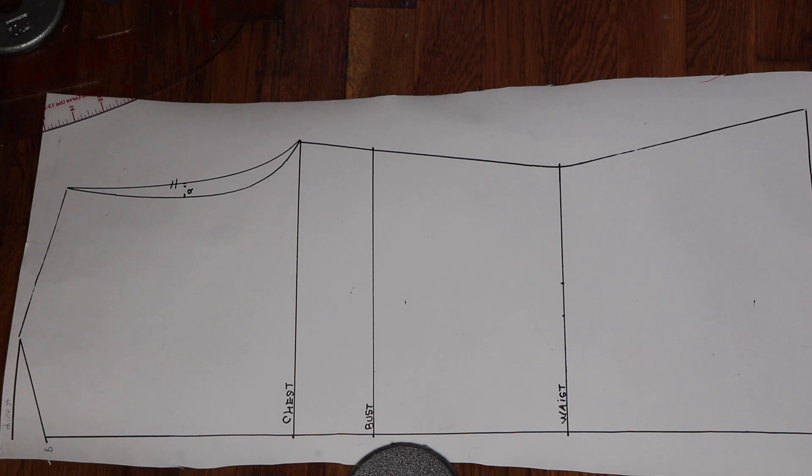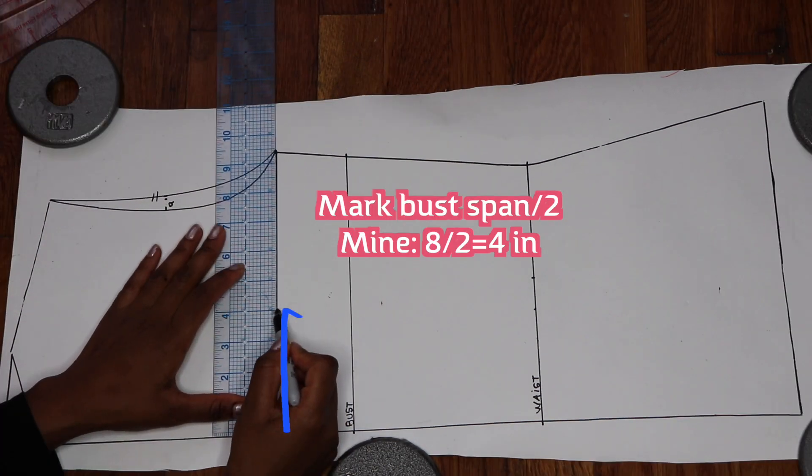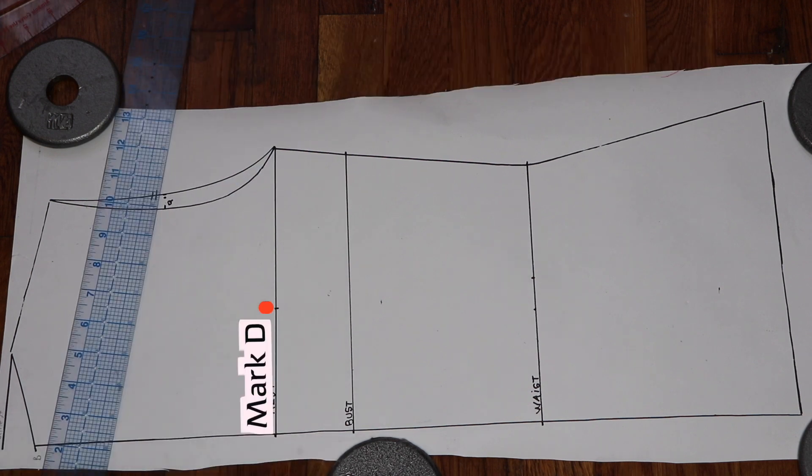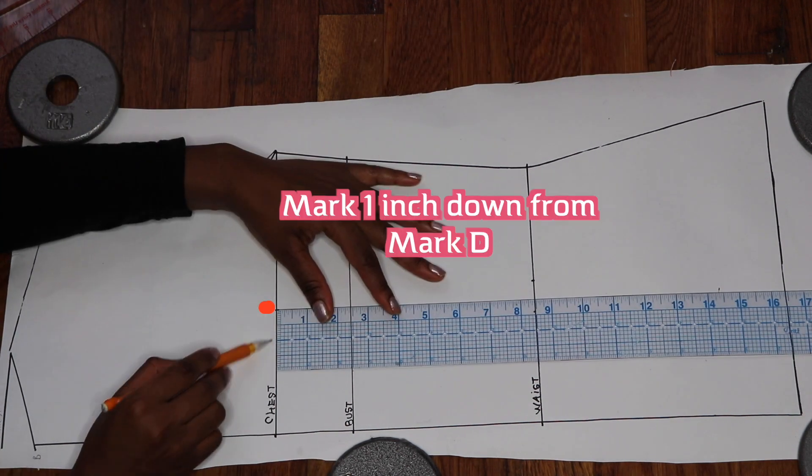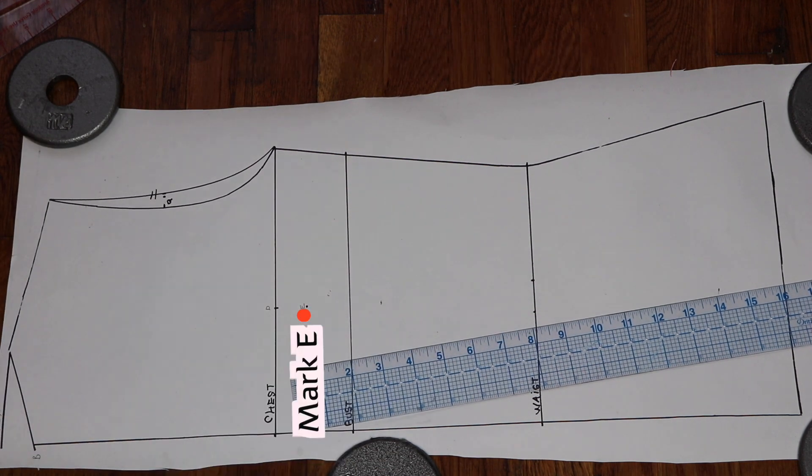Starting at the beginning of the chest line, measure and mark the bust band divided by two. We'll call this mark D. Starting at mark D, measure and mark one inch below mark D and we'll call this mark E.